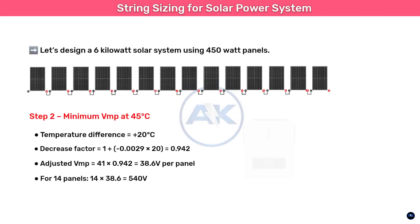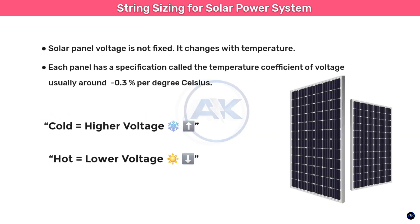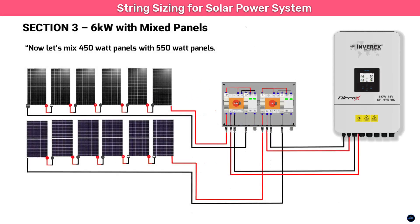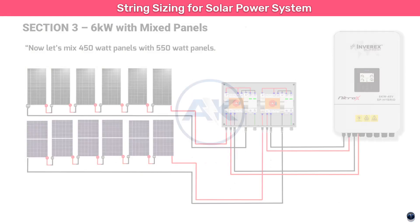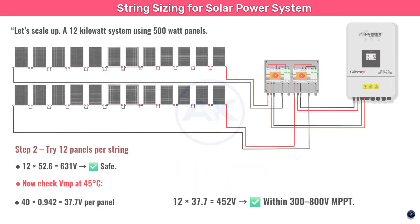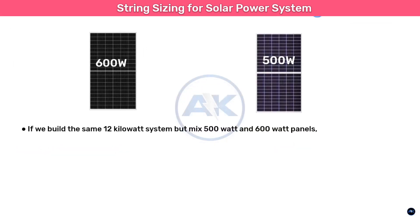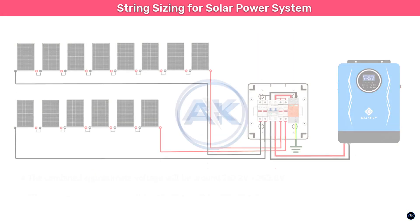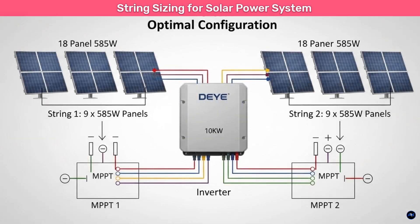First, we'll cover the fundamentals, including how temperature affects voltage. Then we'll calculate real-world examples with 6 kilowatt and 12 kilowatt systems — first with panels of the same wattage, and then with mixed wattages. Stick around until the end because I'll also share pro tips to avoid costly mistakes that could damage your inverter or cut your system's performance in half.